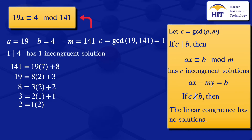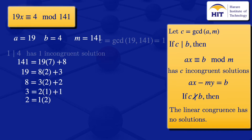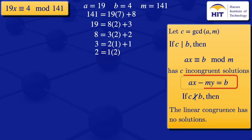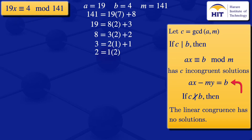To get that incongruent solution we need to solve ax − my = b. Substituting our values: 19x − 141y = 4. I'll label this equation number 1. Now I'll use back-substitution through the Euclidean algorithm steps to express 1 as a linear combination of 19 and 141.